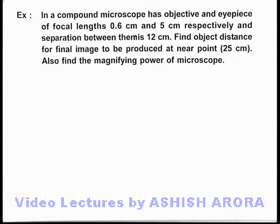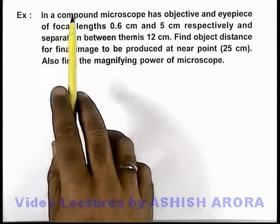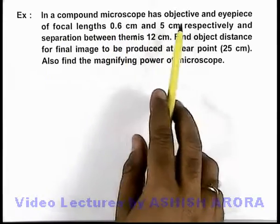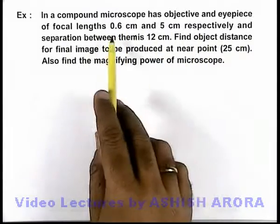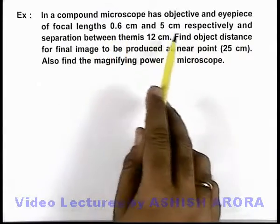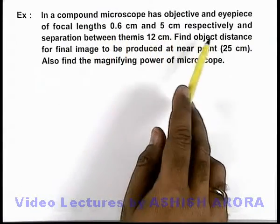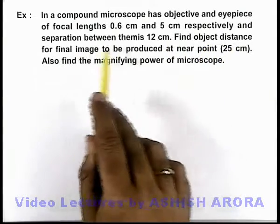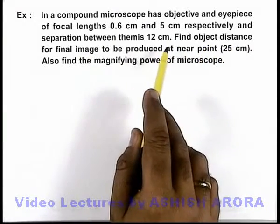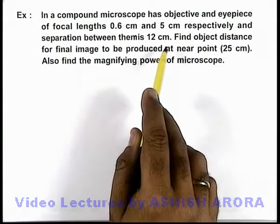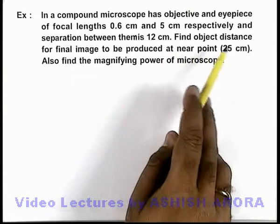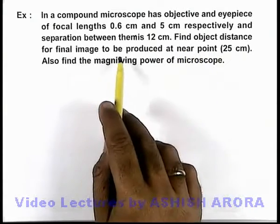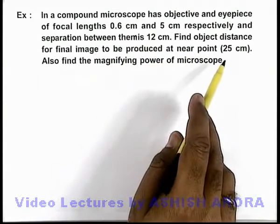In this example, we are given that in a compound microscope, it has an objective and eyepiece of focal length 0.6 and 5 centimeters respectively, and the separation between them is 12 centimeters. We are required to find the object distance for the final image to be produced at the near point.